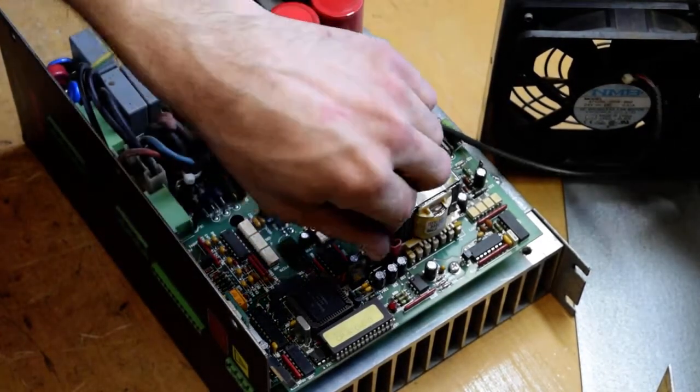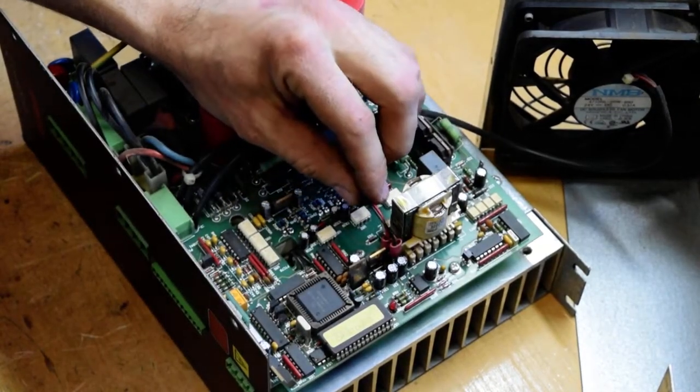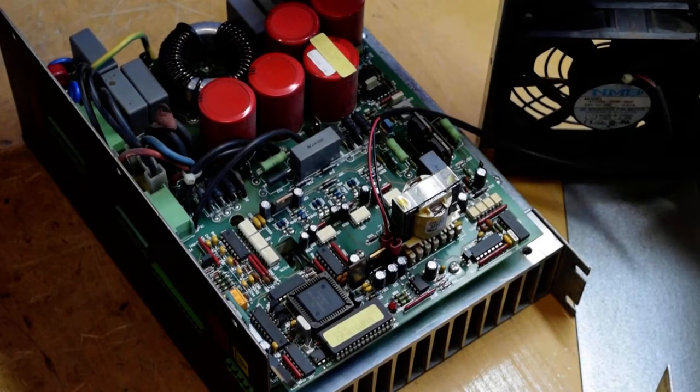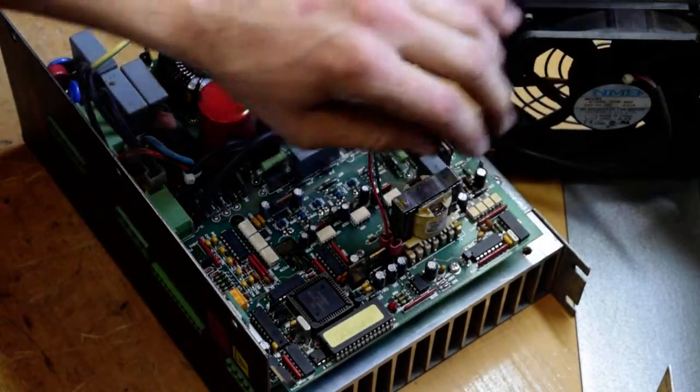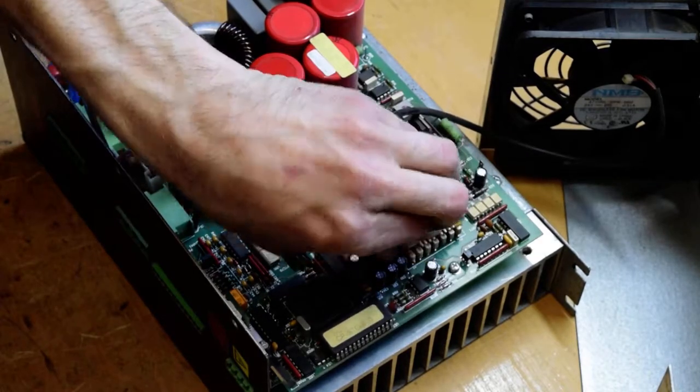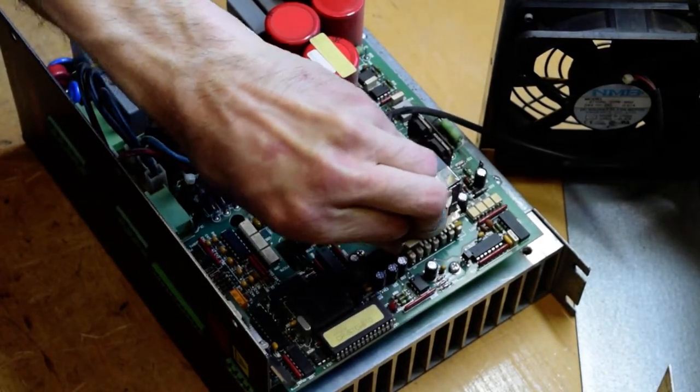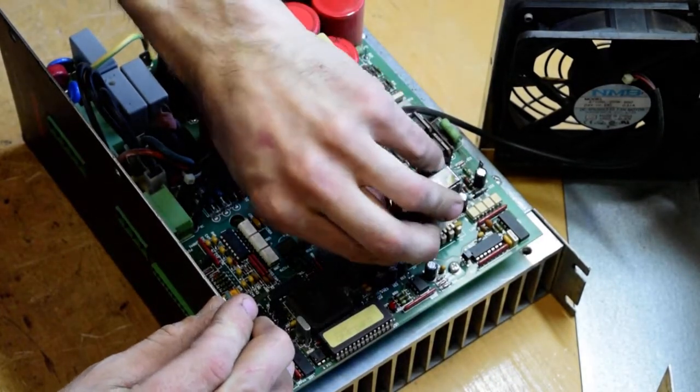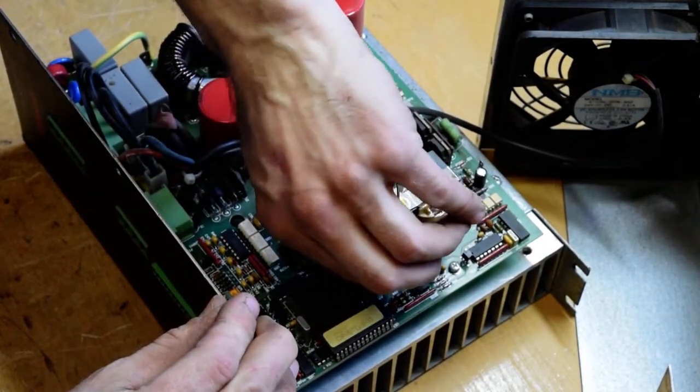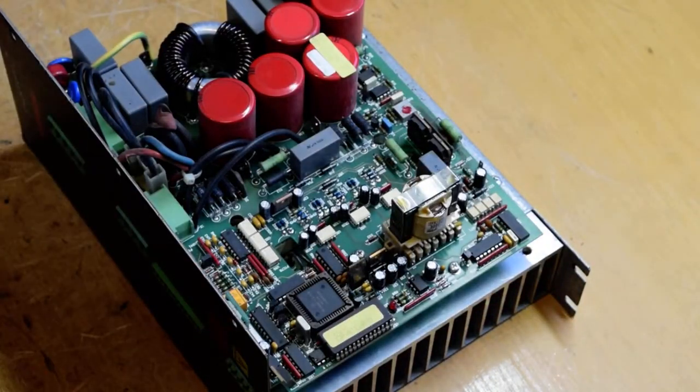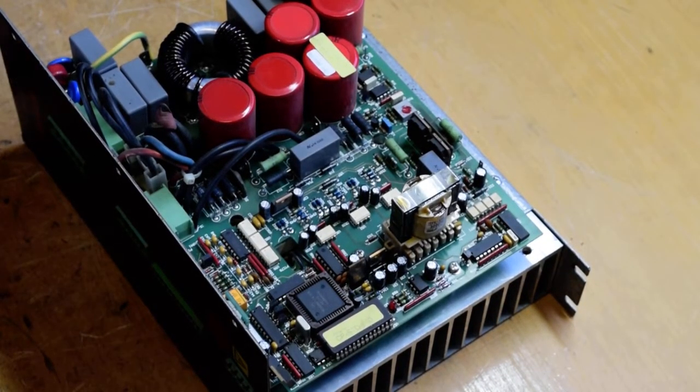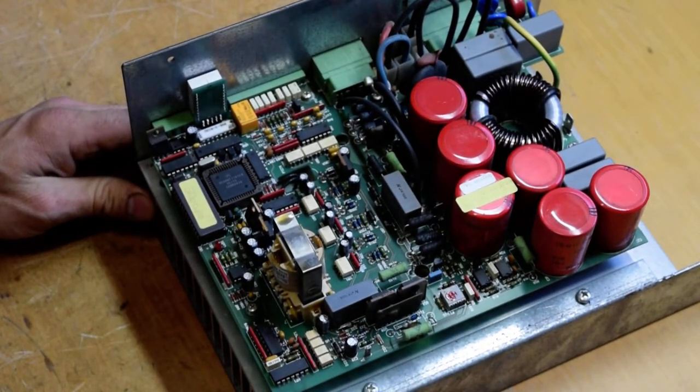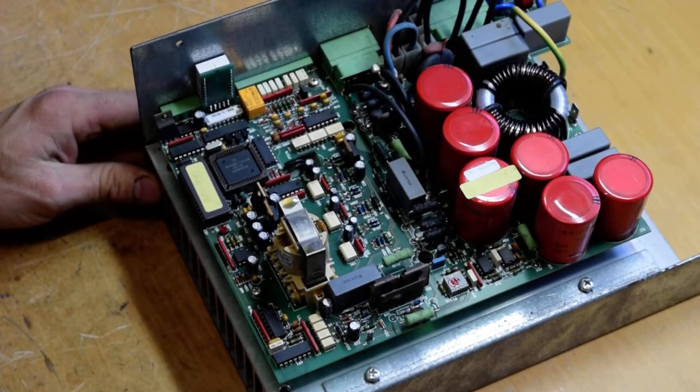We have the plug for the DC fan, which is 24 volts, 0.31 amps. We are going to take it out and put it on the side.